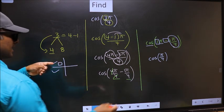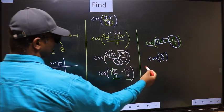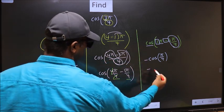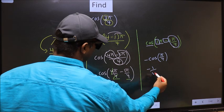So the angle lies in the second quadrant. And in the second quadrant, cos is negative. So we should put negative. So negative cos π/4 is 1 by root 2.